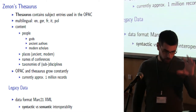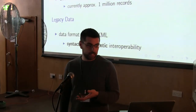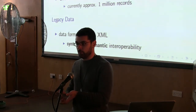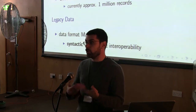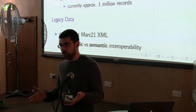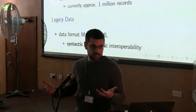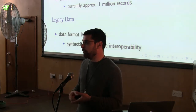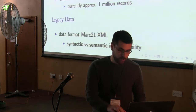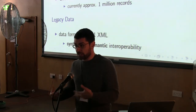One problem with this dataset in relation to interoperability is that MARC21 is more about syntactic interoperability rather than semantic interoperability. There are guidelines and recommendations about how to use MARC21 to describe library records, but how you actually do it depends on how you implement the guidelines. So you might have two sets of MARC21 documents meaning different things by the use of the same fields. The way we tried to solve this was to map and translate this thesaurus into SKOS, a semantic vocabulary.